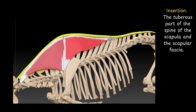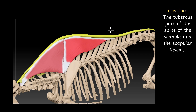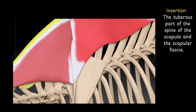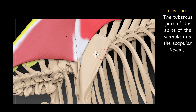Insertion: the muscle inserts into the tuberous part of the spine of the scapula. You can clearly see here — this is the muscle. The origin is from ligamentum nuchae and supraspinous ligament, and now the muscle inserts into this point. So this is the scapular spine, and it is called the tuberous part of the spine, somewhere at the middle of the scapular spine. So this is the tuberous part of the scapular spine. The trapezius muscle inserts into the tuberous part of the scapular spine and scapular fascia.